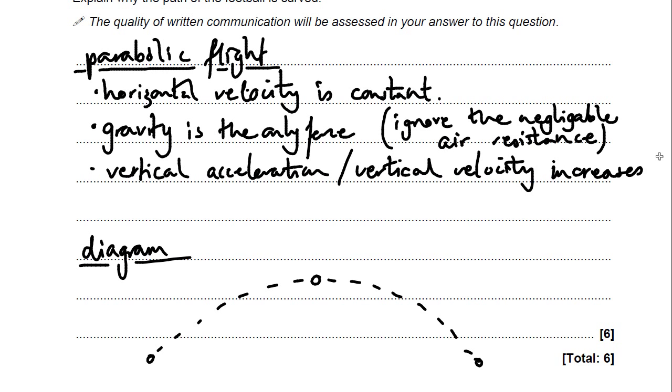And as the vertical velocity is changing, and as the horizontal and vertical vectors are combined together, we say they sum together to produce the resultant velocity, which is this parabolic path. So the last sentence here, the horizontal and vertical vectors sum to give resultant velocity.